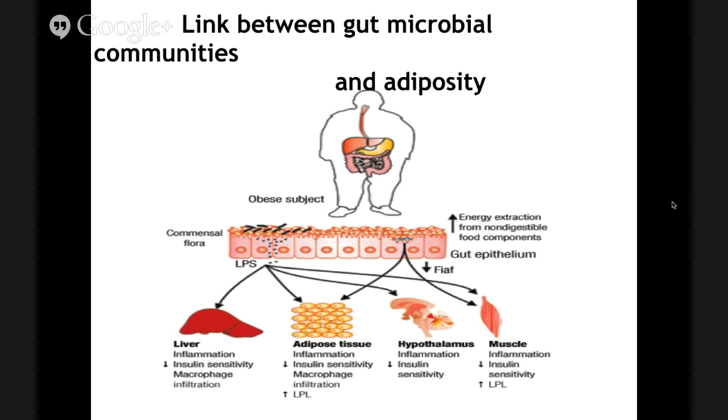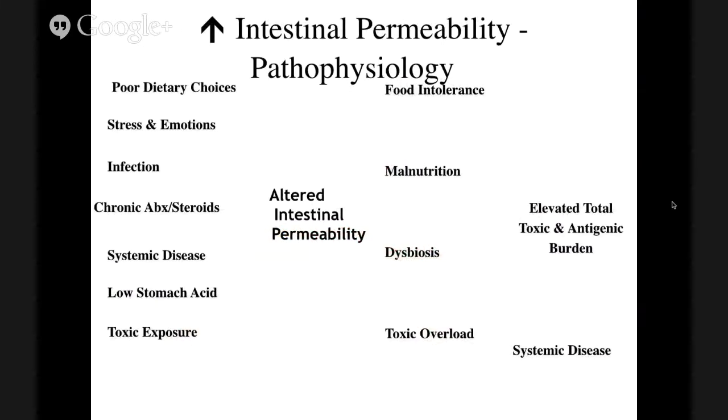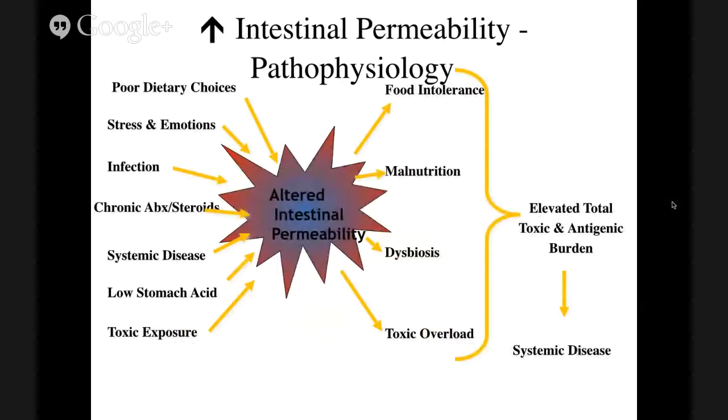Since bacteria are the first to come in contact with food and are affected by our diet, if our diet is poor, bacteria become imbalanced and inflammation is often the result. In this slide you see environmental influences, diet, and immune response. There is the role of antibiotics and lifestyle. You can also see in the slide how hygiene — how you wash your hands — relates to altered intestinal microbes, chronic inflammation, and metabolic dysfunction.